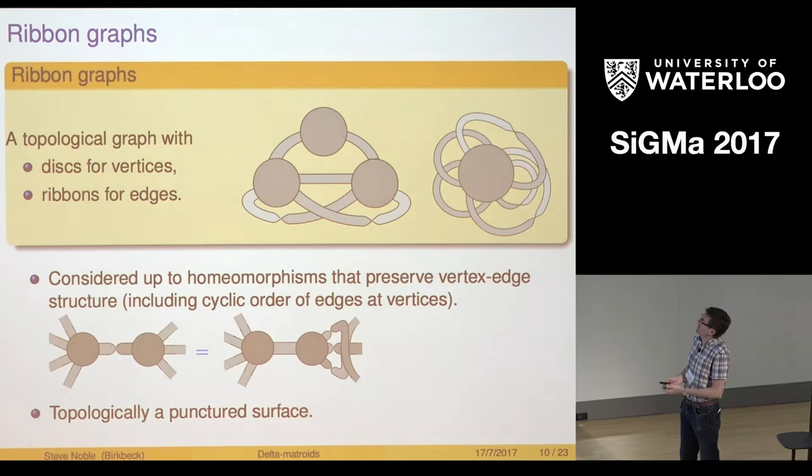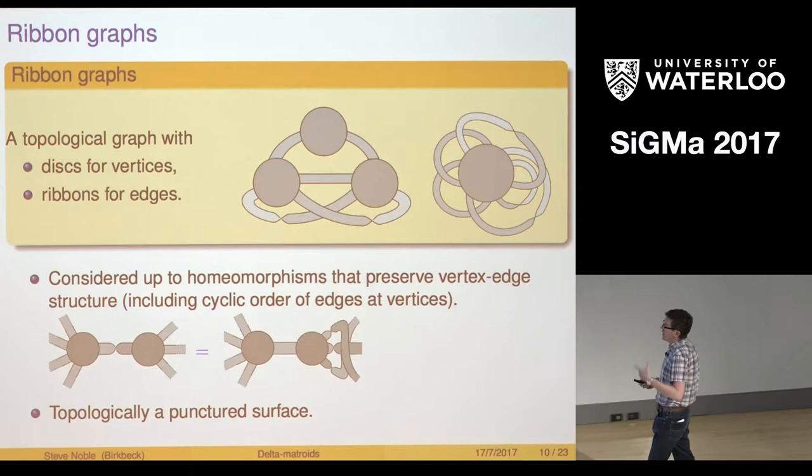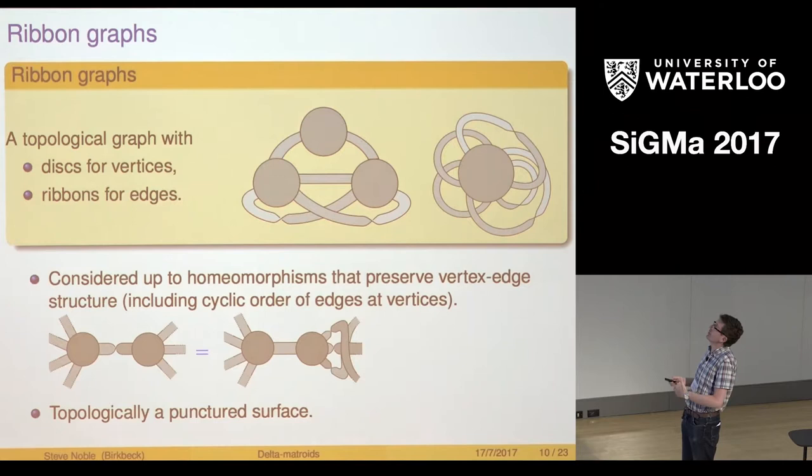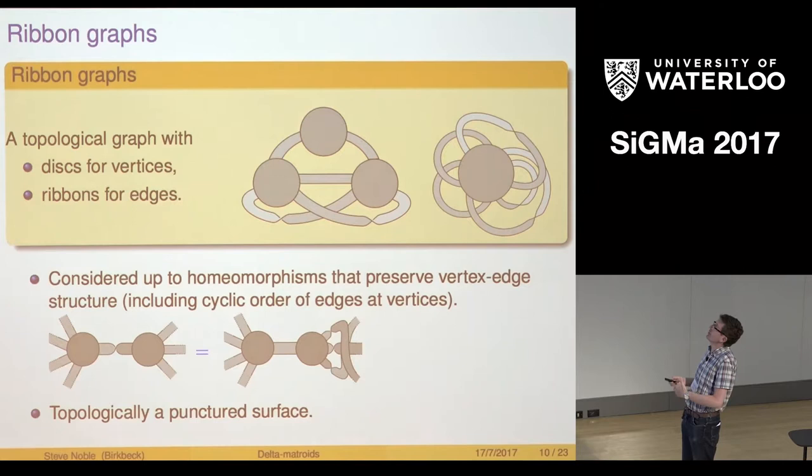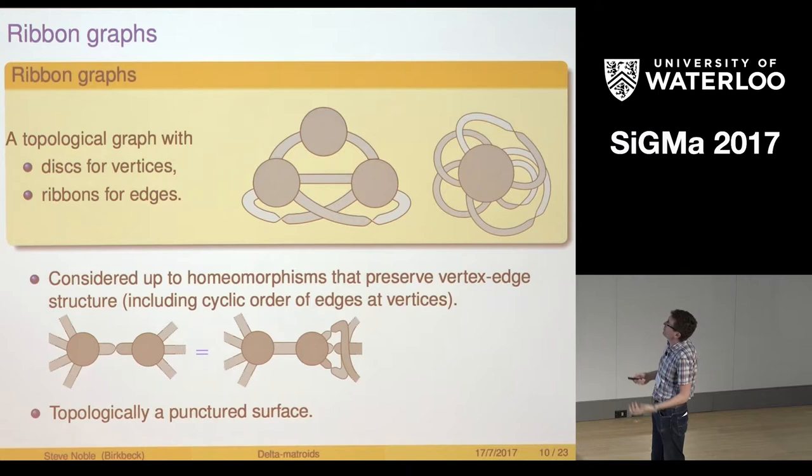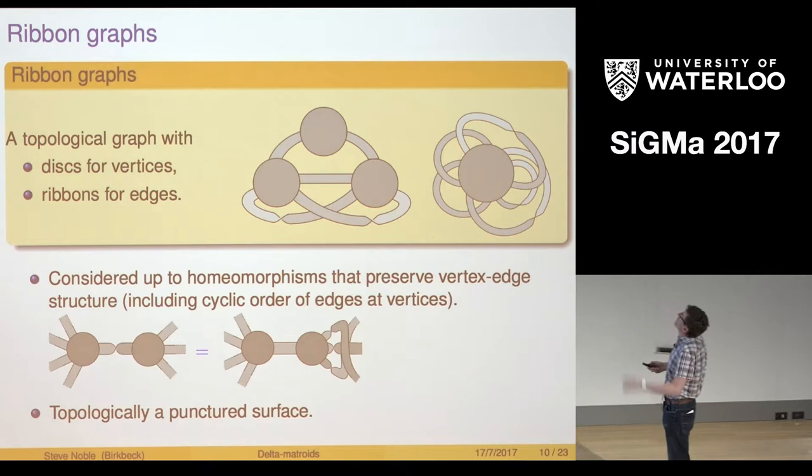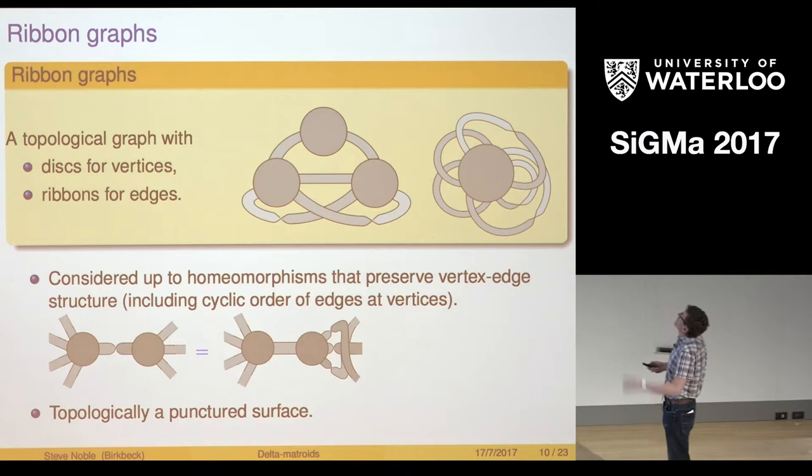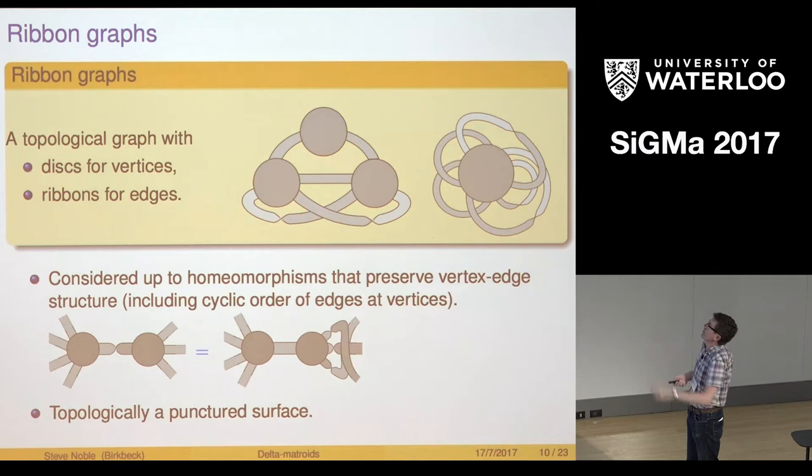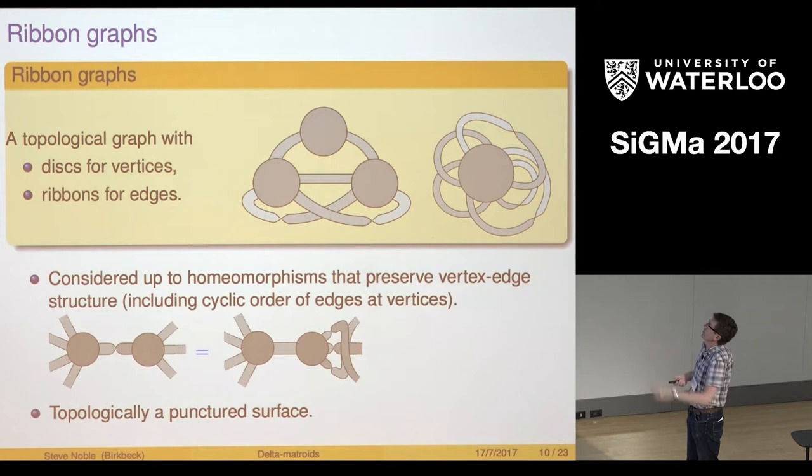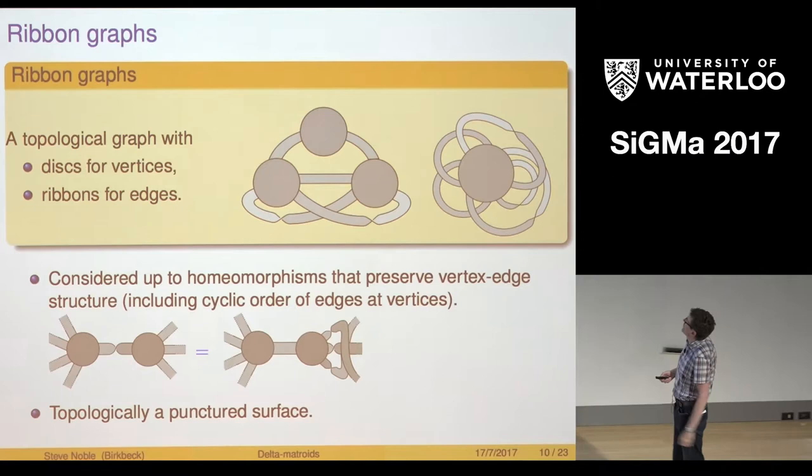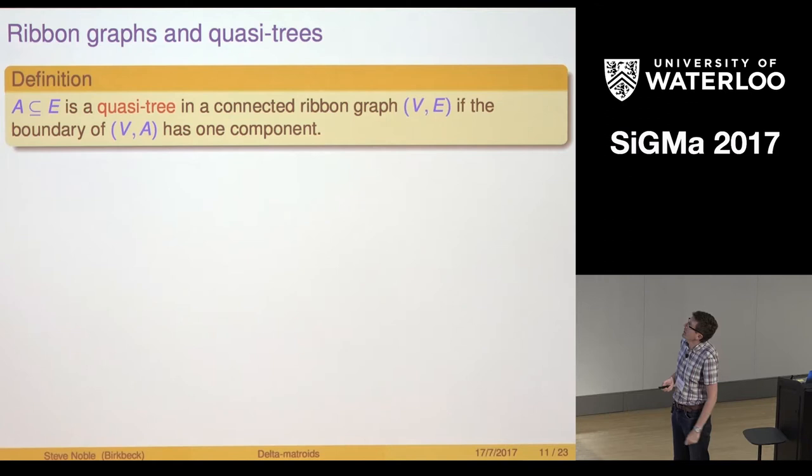Move on to another class of Delta Matroids which is where I came to Delta Matroids from. It's been very useful because ribbon graphs are things where there's been a lot of study in the last few years and this has actually guided us into proving some results about Delta Matroids that we might not have thought about otherwise. Ribbon graphs: we don't want to get too technical with the definition, those are pictures of ribbon graphs, topological objects, disks for vertices, ribbons for edges. What I'm really thinking about is the cyclic order around each vertex.